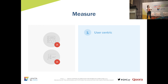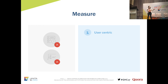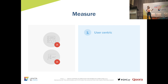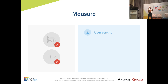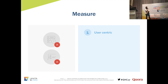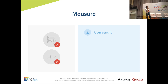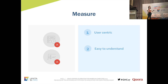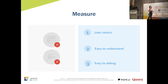Was it because more people in rural areas started using Quora and their internet was just slower, or because we rolled out an iOS app that slowed down the site by 2x? It was very hard to tell. We learned that speed metrics also need to be easy to understand and easy to debug.